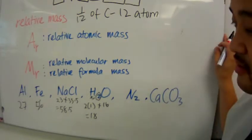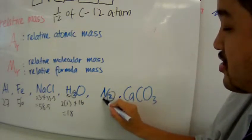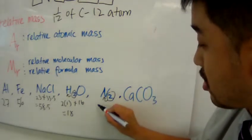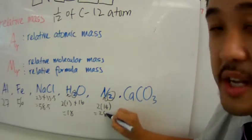What about nitrogen gas? Well, there's two atoms of nitrogen that make up nitrogen gas. So it should be two times fourteen, which is twenty-eight.